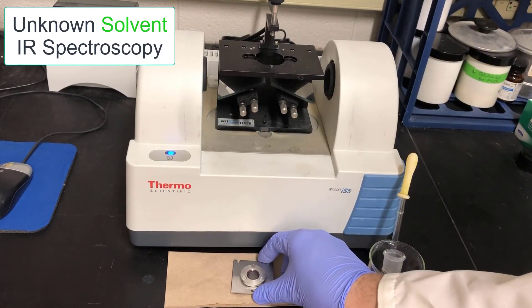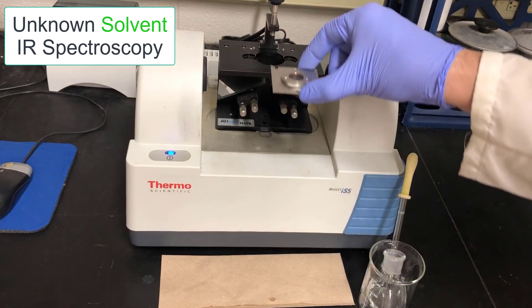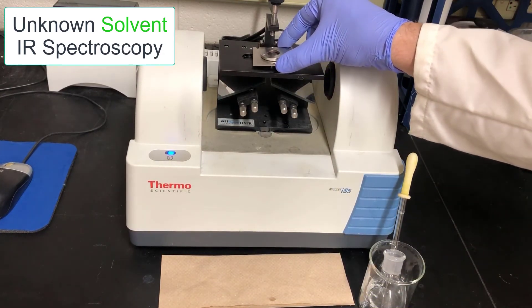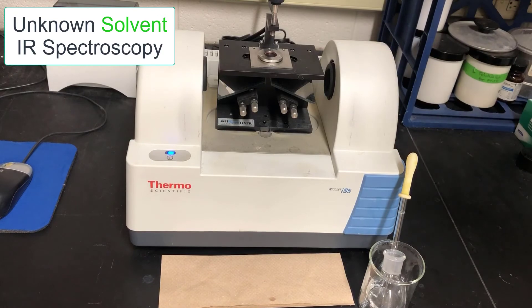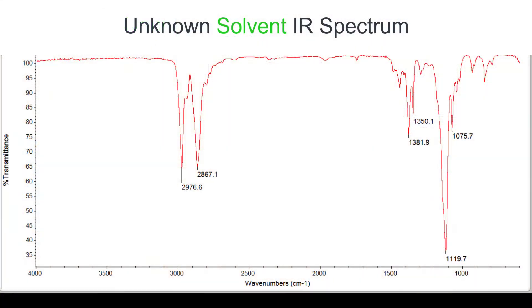So when you're doing IR spectroscopy on an unknown volatile solvent, fill up the well with solvent so that it stays around long enough to acquire eight IR scans on it. Here's a high resolution IR spectrum of the unknown solvent in the unknown in this example video. When you get to this point you should compare your unknown solvent spectrum to the reference IR spectra of the three solvents that were presented in a previous video.